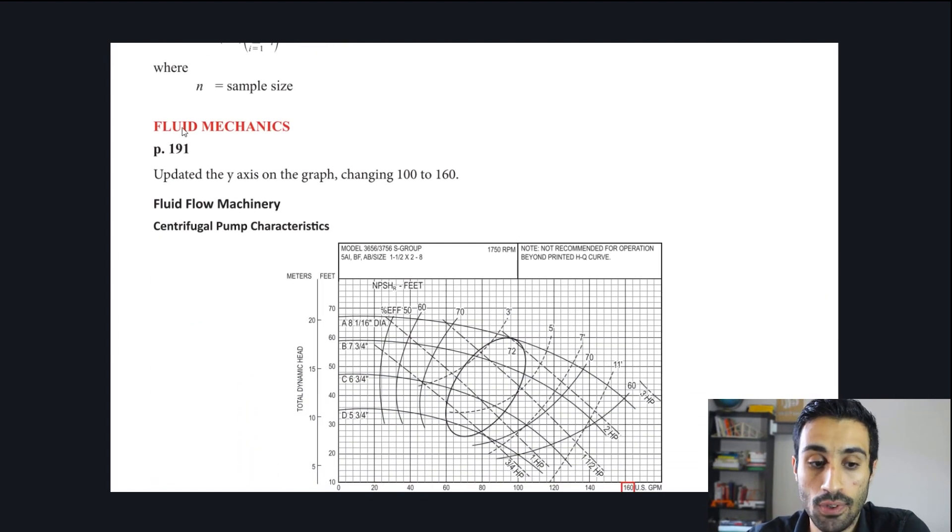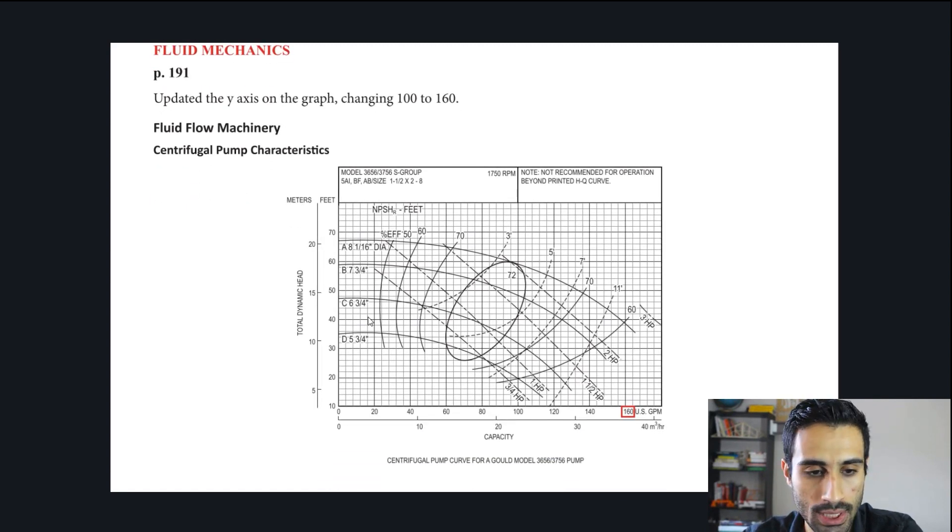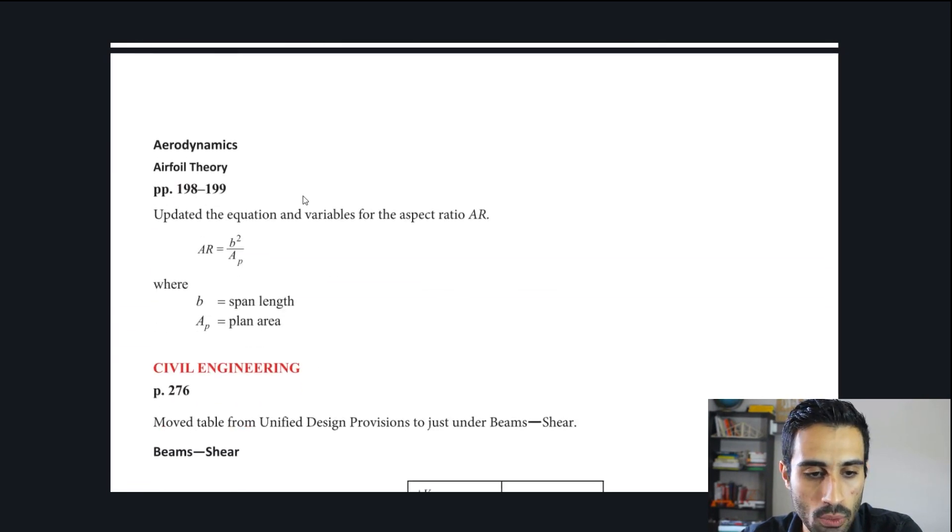The next one is fluid mechanics. On page 191, they just updated the y-axis on the graph to go from 100 to 160. In this case, well, they say y-axis, actually it's going to be the x-axis. So that's just a typo there. But they updated the x-axis to go from 100 to 160. They added that 160 down there as highlighted in red as they denote on this graph. This is important for the FE civil and FE mechanical, knowing how to read this graph and all of that stuff and any type of question they may ask for the centrifugal pump characteristic curves.